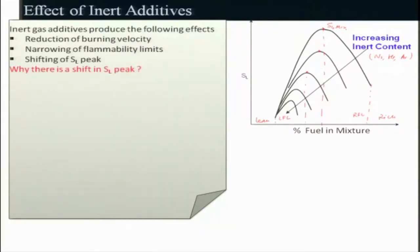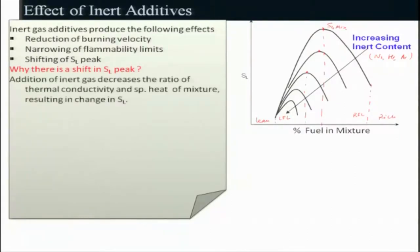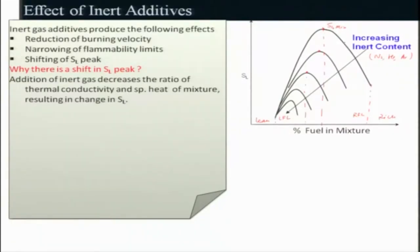Why is there a shift in the laminar burning velocity peak? With the addition of inert gases, the ratio of thermal conductivity to specific heat of the mixture results in a change in burning velocity. Thermal conductivity plays a very important role, and so does specific heat. If specific heat is enhanced, the temperature will decrease for the same heat release rate. So if temperature decreases, naturally the reaction rate decreases, and if that decreases, burning velocity will also decrease.